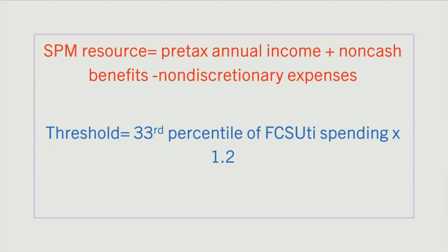The threshold of the SPM is the 33rd percentile of necessary spending, times 1.2, or the bottom tertial of people spending money on food, clothes, shelter, utilities, and telephone and internet, times 20%, to represent additional necessities. We think that the SPM well represents the necessities of modern life and accounts for non-cash benefits, familial and geographical differences, and other things that the OPM left out.